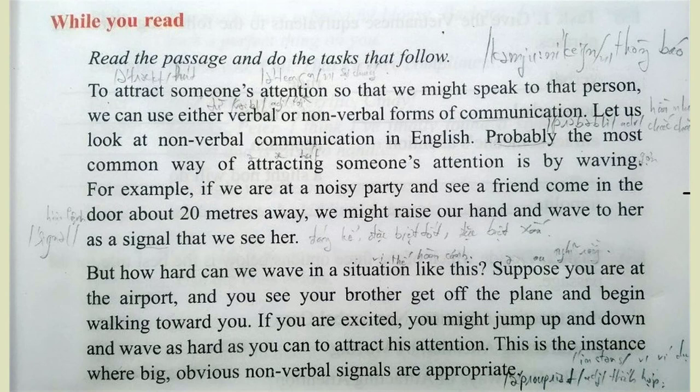To attract someone's attention so that we might speak to that person, we can use either verbal or nonverbal forms of communication. Let us look at nonverbal communication in English. Probably the most common way of attracting someone's attention is by waving. For example, if we are at a noisy party and see a friend come in the door about 20 meters away, we might raise our hand and wave to her as a signal that we see her.